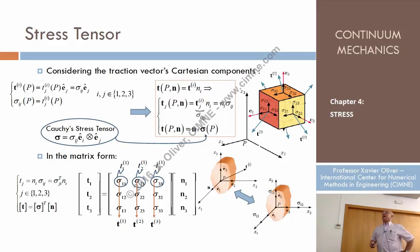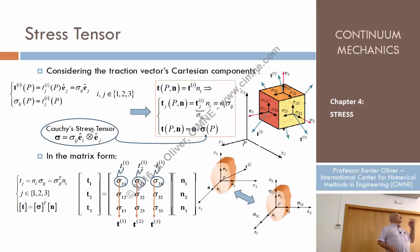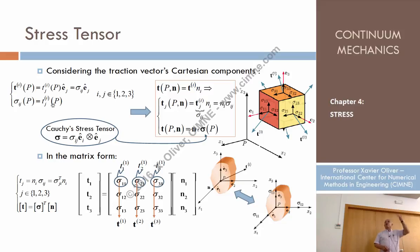Now, what if I define a second-order tensor whose components are precisely sigma_ij? That is what Cauchy defined as the stress tensor. The stress tensor is defined at point P, but it doesn't depend on any normal, because it is defined on the basis of sigma_ij, which are components of the traction vector on the Cartesian planes — and those are independent of the normal.